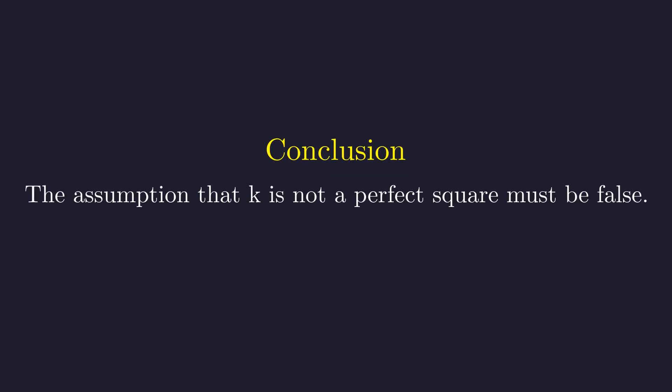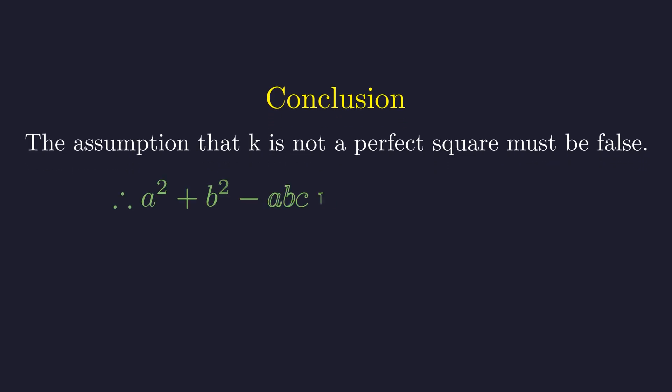This impossibility means our initial assumption was wrong. The only logical point of failure was our premise. The assumption that a solution could exist for a non-square k must be false. Therefore, for any positive integers a, b, and c satisfying the condition, the expression must be a perfect square. And that completes our proof.